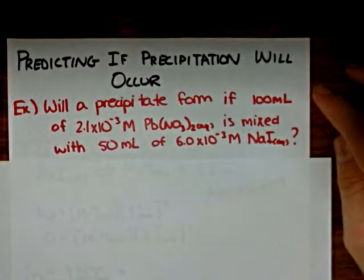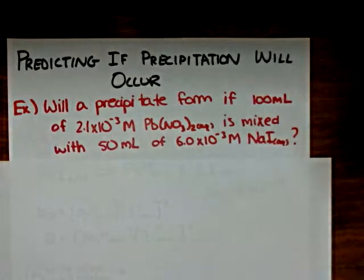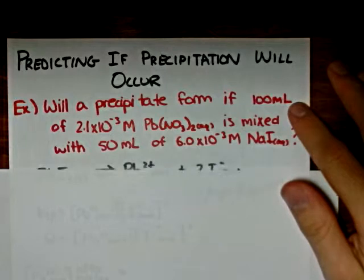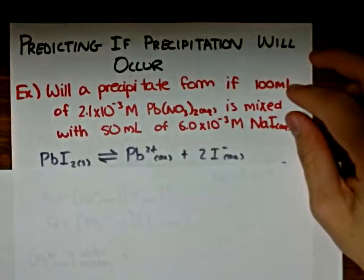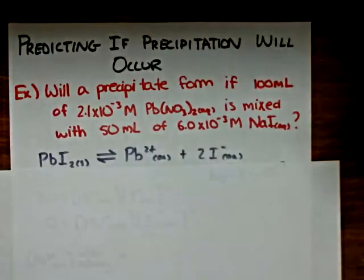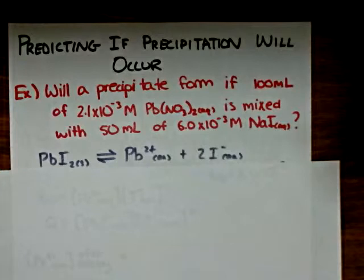The first thing we want to do is identify what the precipitate will be if it does form. By looking at a solubility table, we know that the precipitate will be lead(II) iodide. And if that lead(II) iodide is formed, it will form a solubility equilibrium with the lead(II) ion and two iodide ions.